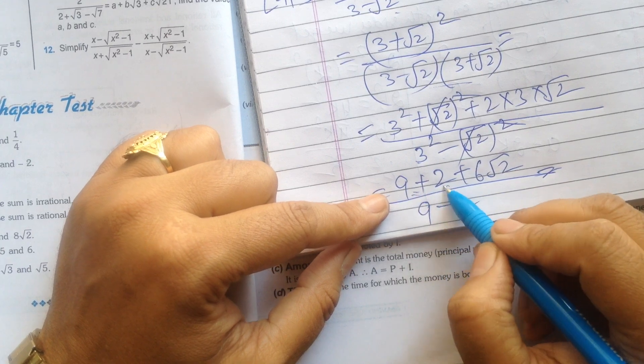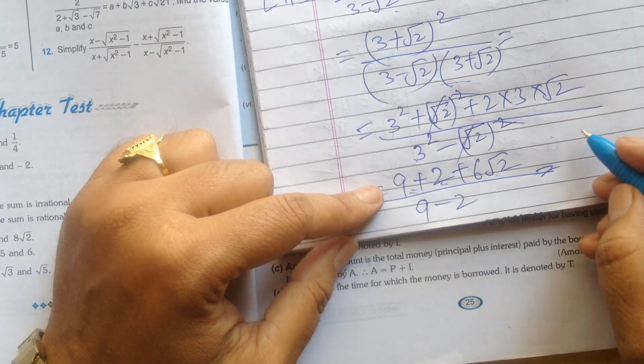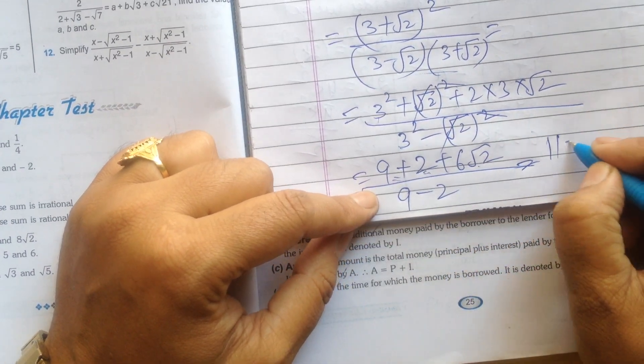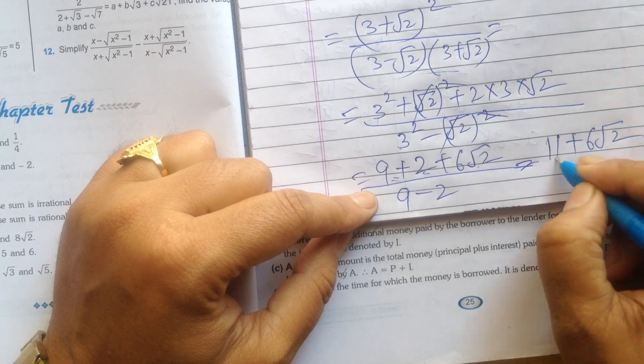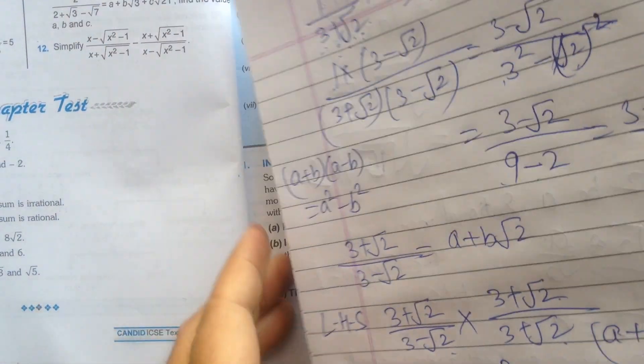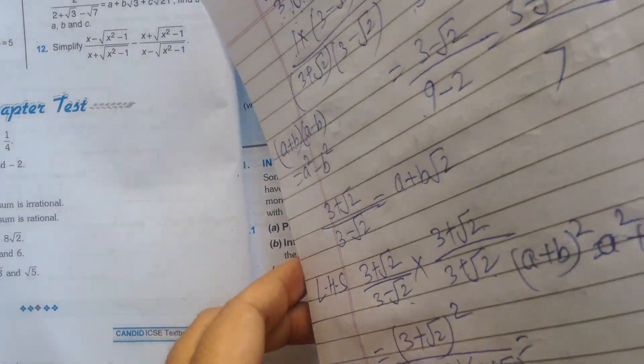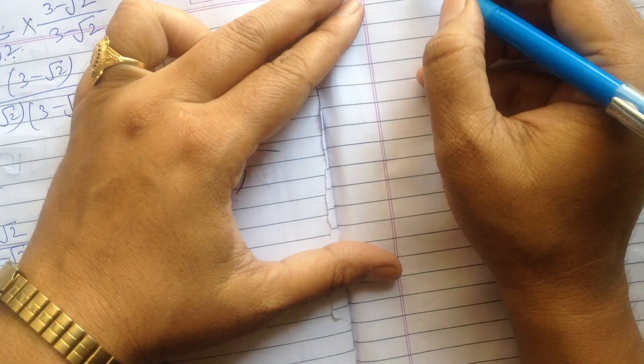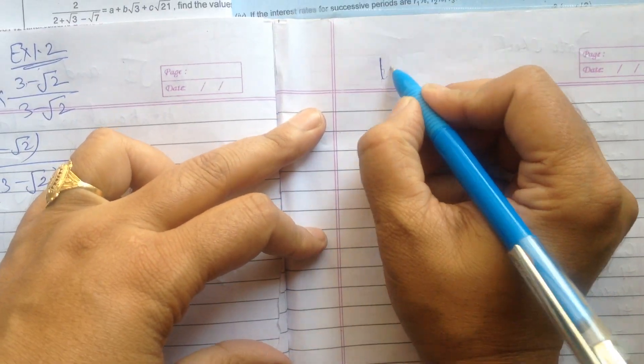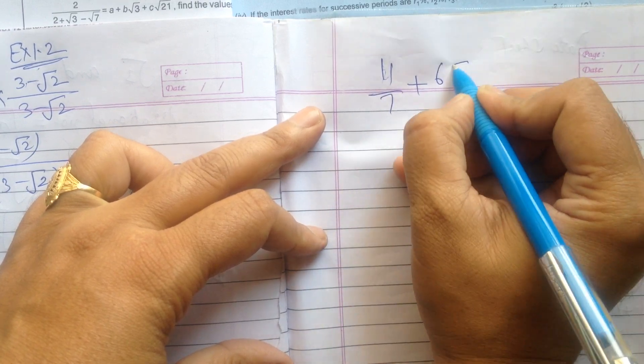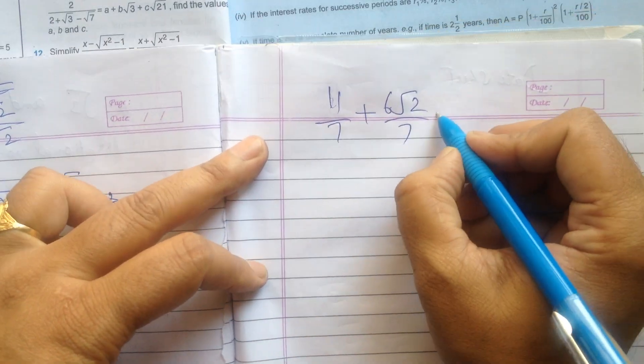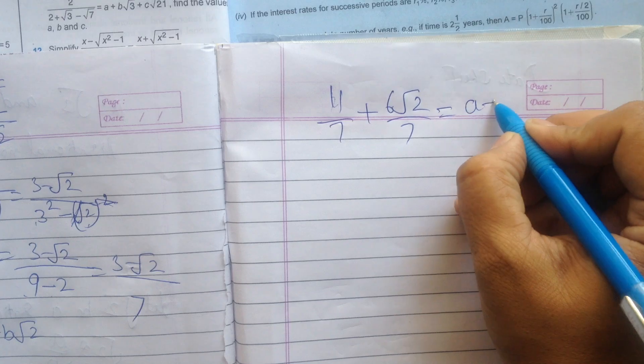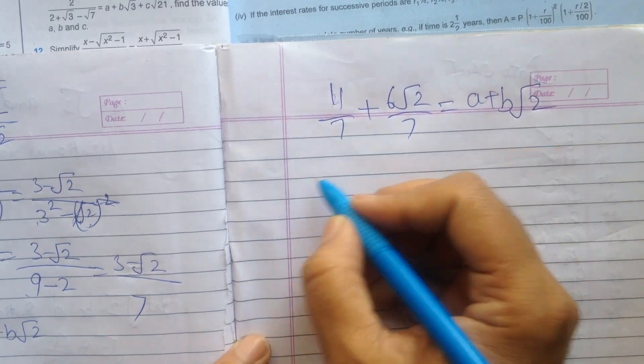Then 9 minus 2. We have to add only the numbers, not the square root terms. 9 plus 2 is 11. 11 plus 6 square root 2 upon 7. Then we separate the denominator into both terms: 11 upon 7 plus 6 root 2 upon 7.